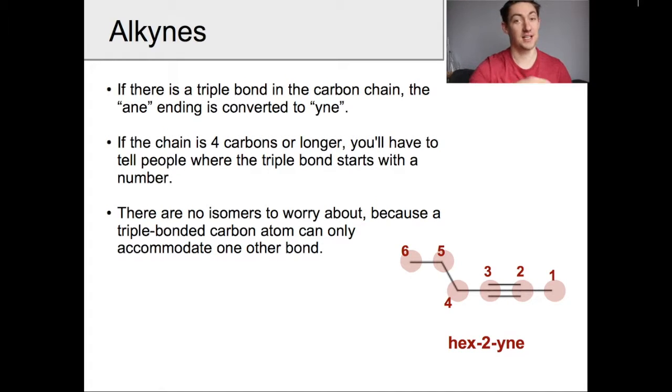Today we're going to talk about alkynes. Alkynes are carbon chains that have a triple bond somewhere within the molecule between two of the carbon atoms. You're going to need to tell people where that triple bond is, you're going to need to tell people how long the carbon chain itself is, and you're going to attach the ending Y-N-E onto the end to show people that it is an alkyne.